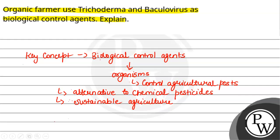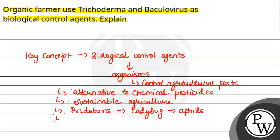There are different types of biological control agents. First are predators — these are animals that prey on pests and help reduce their population. For example, ladybugs feed on aphids, mites, and other harmful insects, reducing their population.